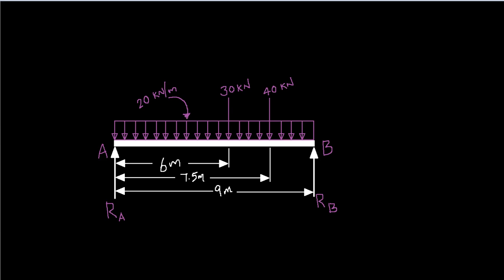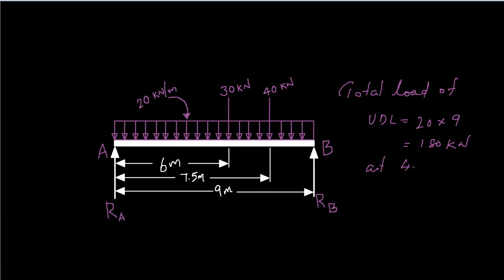To calculate the bending moment and shear force diagram, first you need to assess the reactions at A and B. To calculate those reactions, convert the uniformly distributed load to a point load acting at the mid-span. The total UDL load is 20 kN times 9 meters, which is 180 kN, acting at 4.5 meters from either A or B.